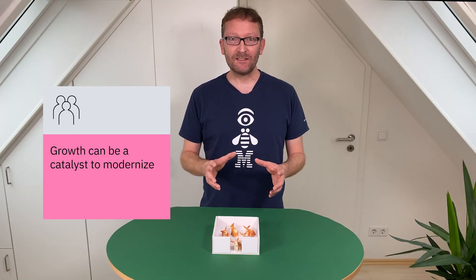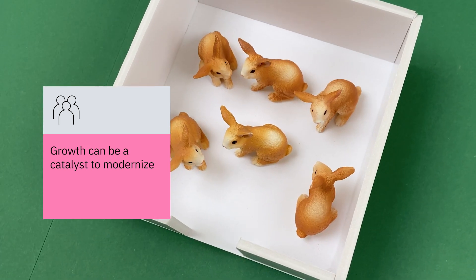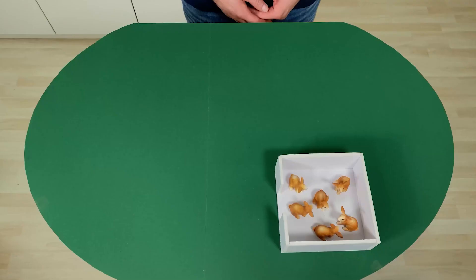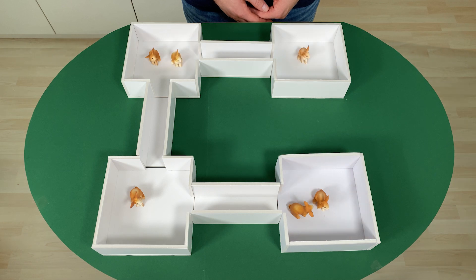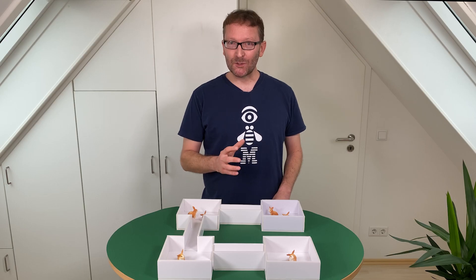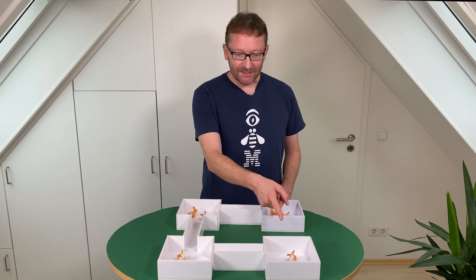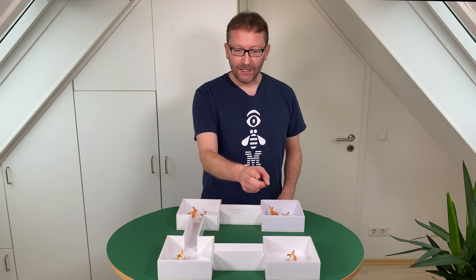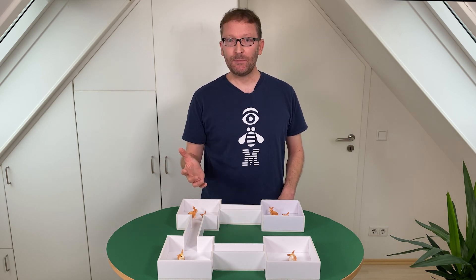This was the catalyst for us to modernize the cage and replace it with the structure of several hutches and pathways. Let's look at this structure as a microservices application. These hutches are connected with pathways, just like loosely coupled microservices.